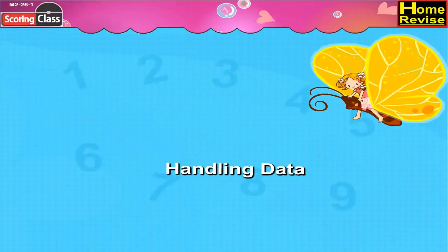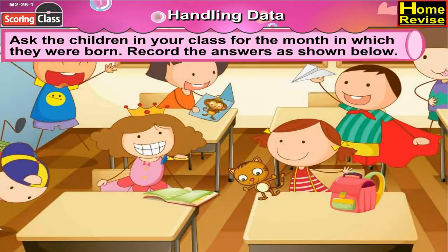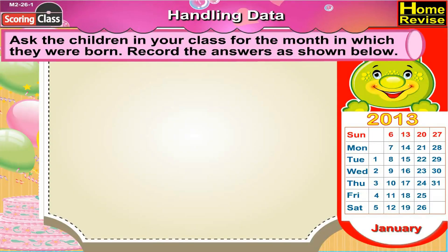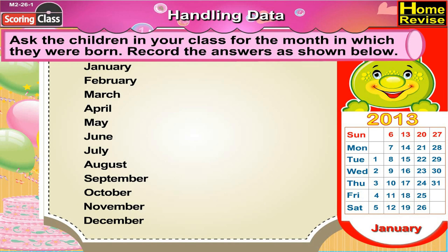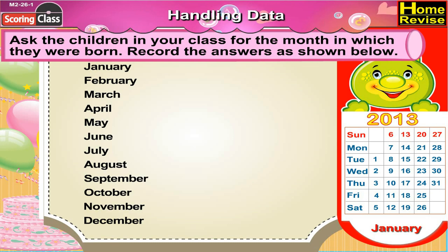Handling data. Ask the children in your class for the month in which they were born. Record the answers as shown below. Here we'll prepare a chart from the month of January to December, and in front of every month we'll write down the names of the children who have their birthday in that particular month.